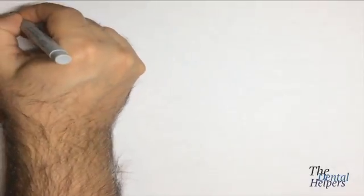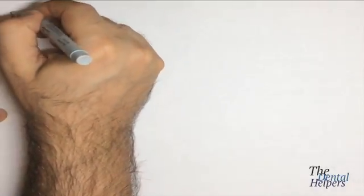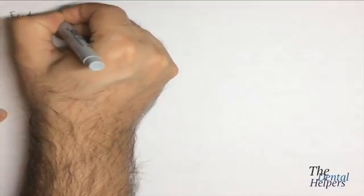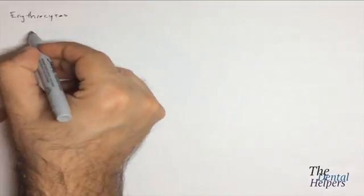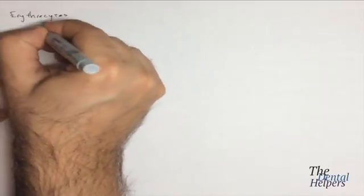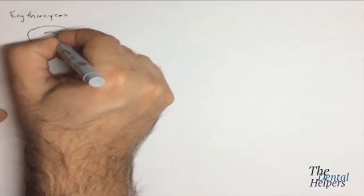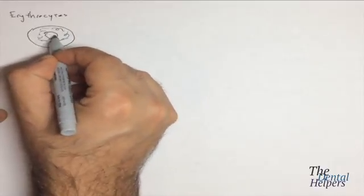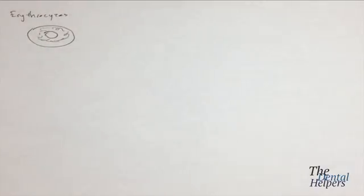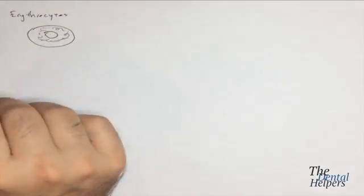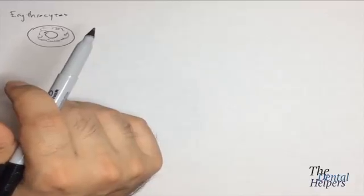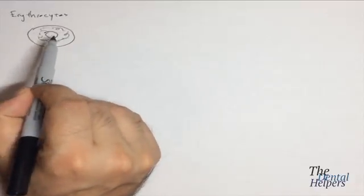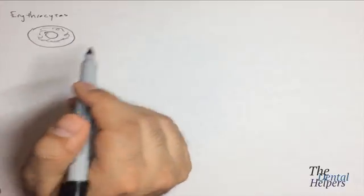Alright, so now we're going to look at the blood cells. We have our erythrocytes, which are basically the red blood cells, and the erythrocytes are basically a biconcave disc. So it looks like a donut that has a membrane in the center, basically like a donut with the center with a thin membrane.